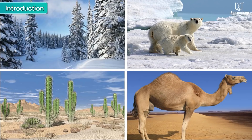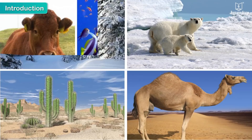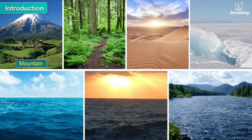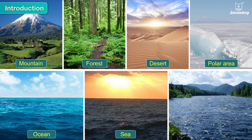Plants and animals are seen all around us in different surroundings. They survive on land, in the sea, even in the air. They are found in mountains, forests, deserts, polar areas, oceans, seas, rivers, and more.